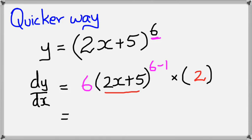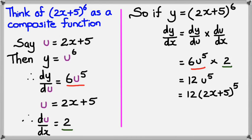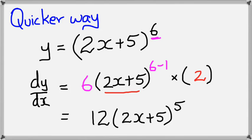And simplifying this, you would get 12, because 6 times 2 is 12, and you have 2x plus 5 to the power of 5. This is the faster way of doing this compared to the slower method we showed earlier.